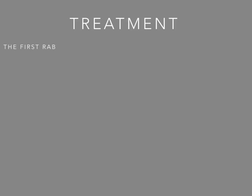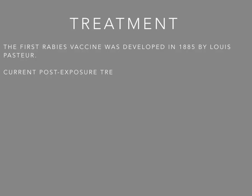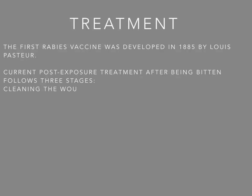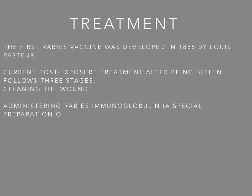The first rabies vaccine was developed by Louis Pasteur in 1885. Current post-exposure treatment for someone who has been bitten follows three stages. First, cleaning the wound. Second, administering rabies immunoglobulins — a concoction of antibodies.